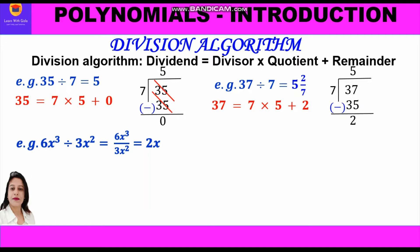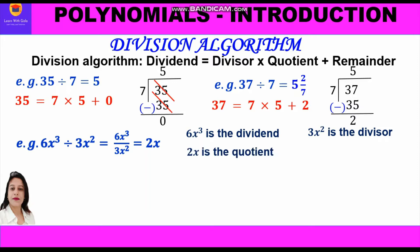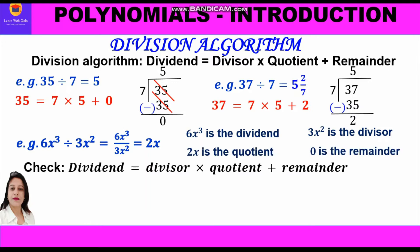Now let us take the case of a polynomial where 6x³ is divided by 3x². Both are monomials and we get 2x as the quotient. Here 6x³ is the dividend, 3x² is the divisor, 2x is the quotient, and 0 is the remainder. We can check the answer by putting these values in the division algorithm.